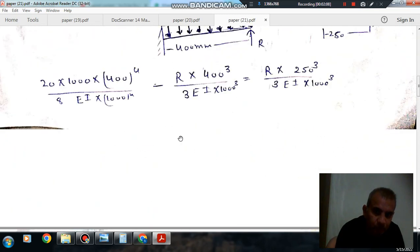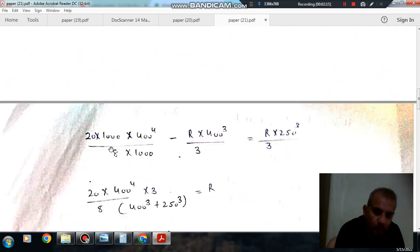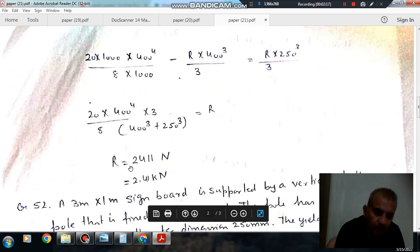R comes out as, because only unknown thing is R is constant for both. So we can find out R, R is 2411 Newton, so that is 2.41 kN.